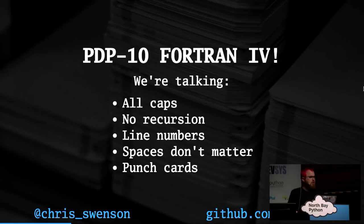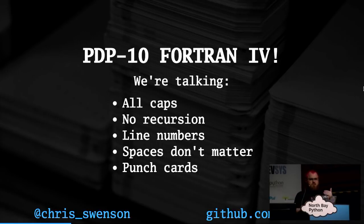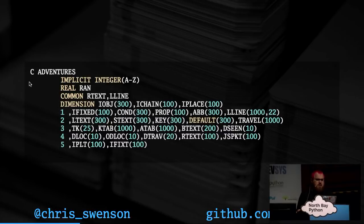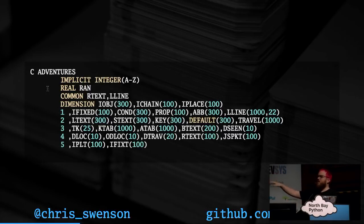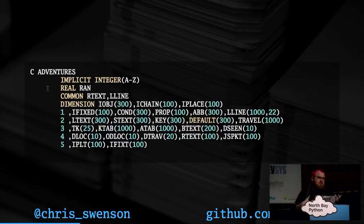It was meant to be entered on punch cards, so I actually had to modify the source a little bit to get it to fit on slides with syntax highlighting, because modern syntax highlighters don't understand such weirdly formatted code. Typically every line starts with a tab, since you would enter line numbers on the leftmost side. If the first character is a C or an asterisk, that means it's a comment. This is a data declaration statement — the first line says any variable I don't otherwise declare is an integer if it's a single letter. And 'real ran' is actually an undocumented function that returns a random variable.